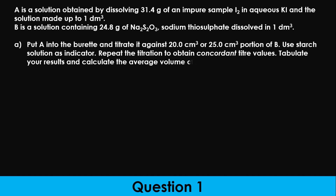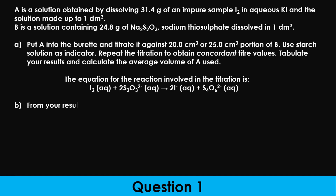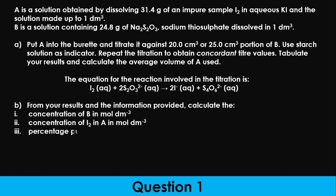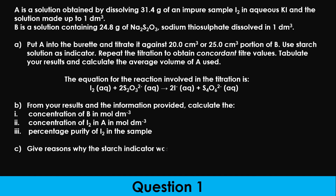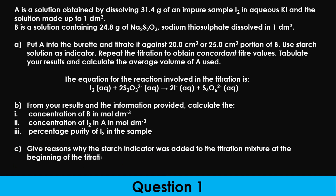Use starch solution as indicator. Repeat the titration to obtain concordant titer values. Tabulate your results and calculate the average volume of A used. The equation of the reaction is as shown on the screen. From your results and information provided, calculate: the concentration of B in moles per dm³, the concentration of iodine in A in moles per dm³, and the percentage purity of iodine in the sample. Give reasons why the starch indicator was added at the beginning of the titration.